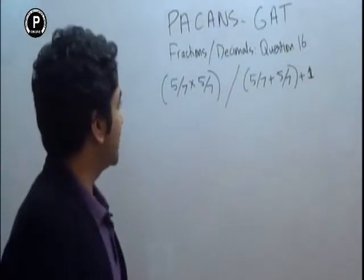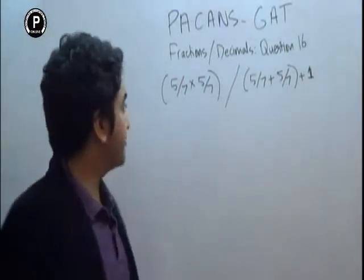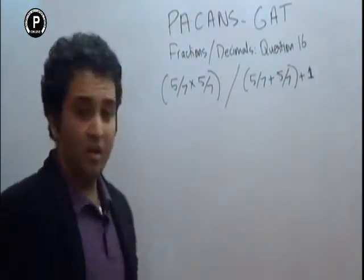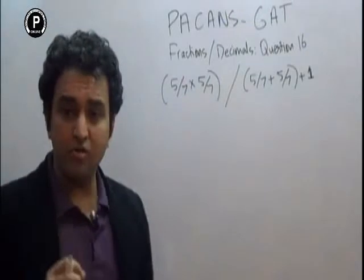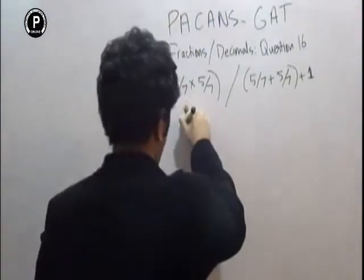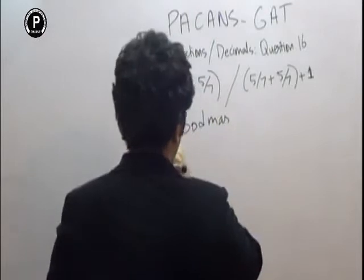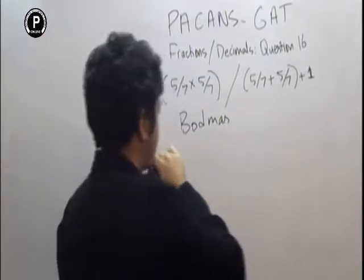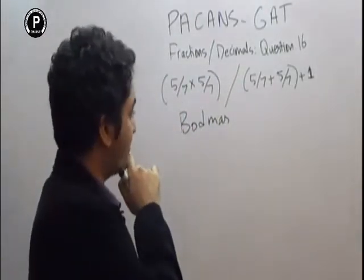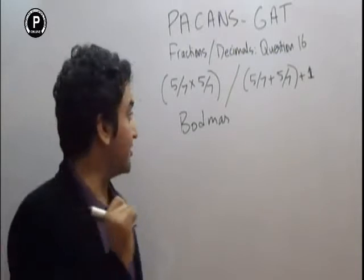Welcome to Paikin's GATT question number 16 for fractions and decimals. In order to solve this question you have to remember the BODMAS rule, which says that first you start with the brackets, then you divide, then you multiply, then you add, and then you subtract.